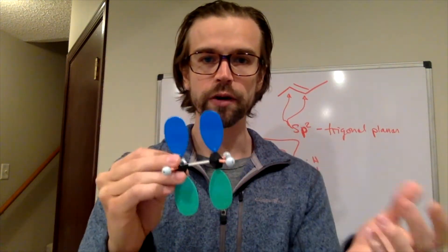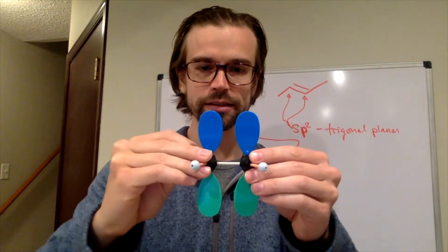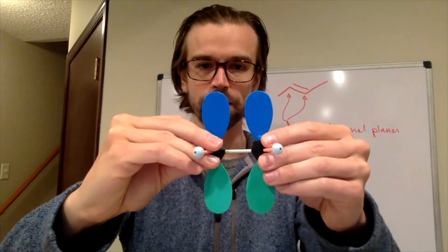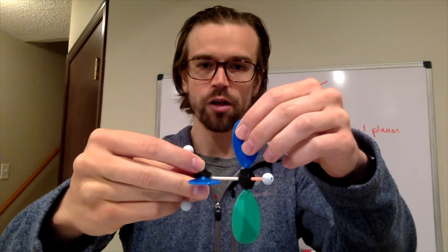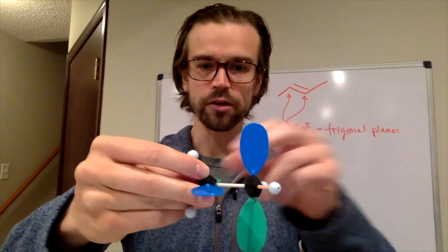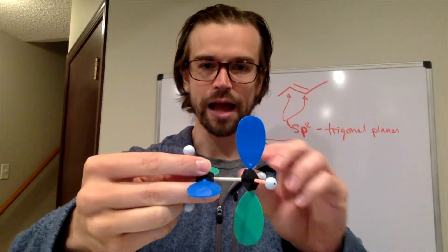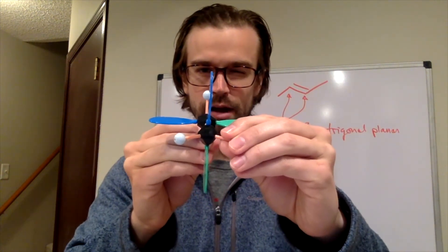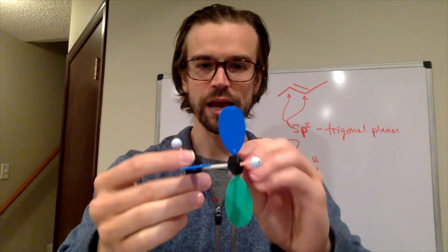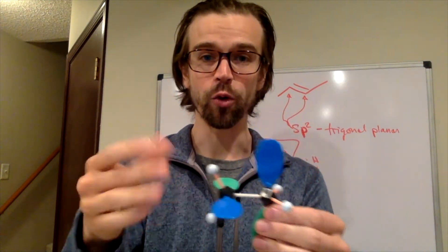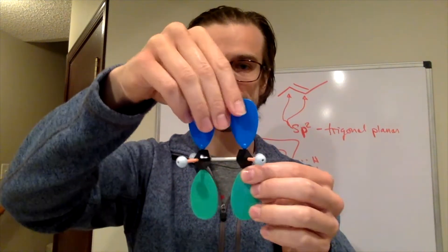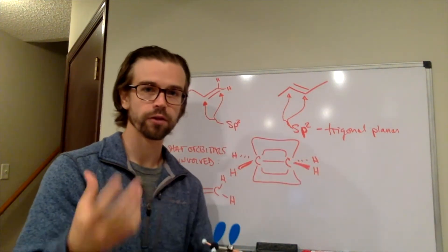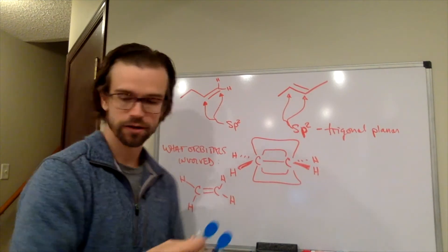Why is there no free rotation around alkenes? Because if we try to rotate and this is overlapping and this is overlapping, when we get to here, this no longer is overlapping with any of the pi orbitals here. They're out of plane with each other. They're in opposite planes, which in chemistry terms we often call, they are orthogonal to one another. And they have to be in the same plane for that overlap to occur for there to be that pi bond.